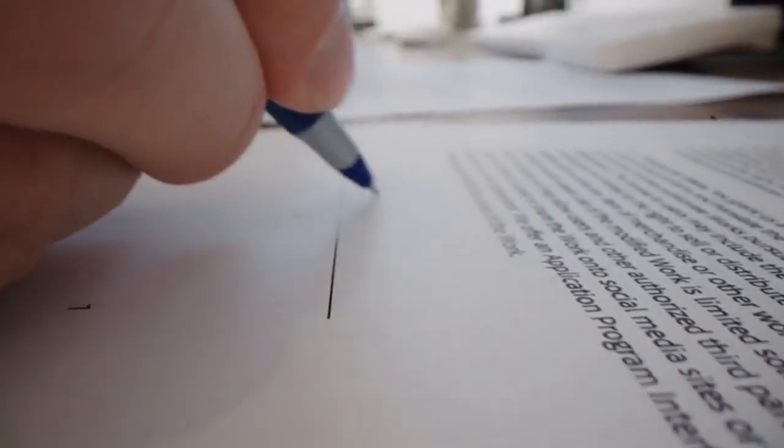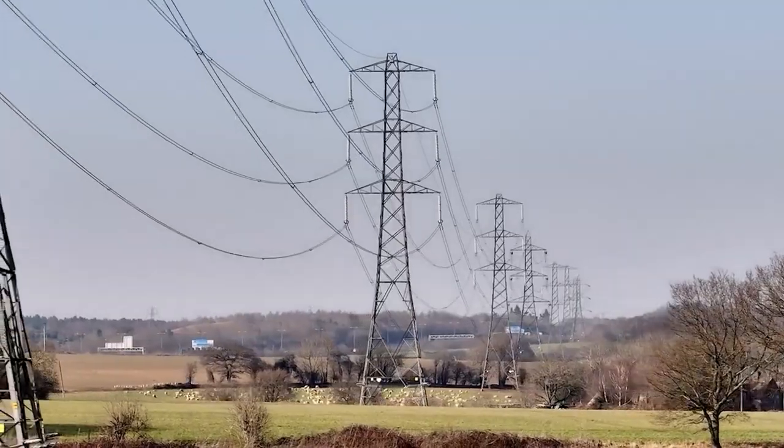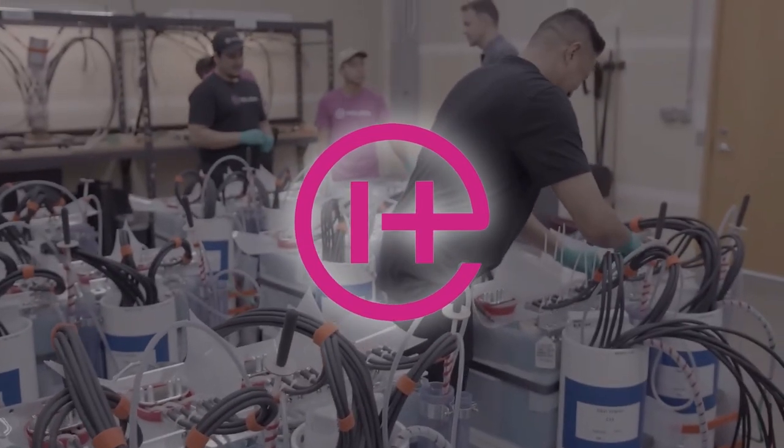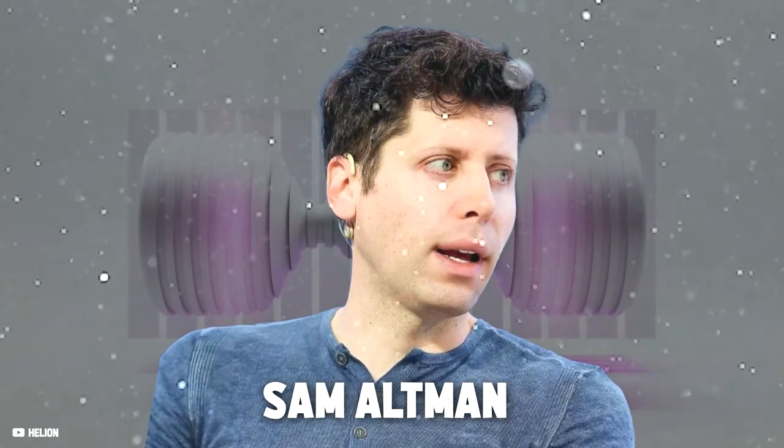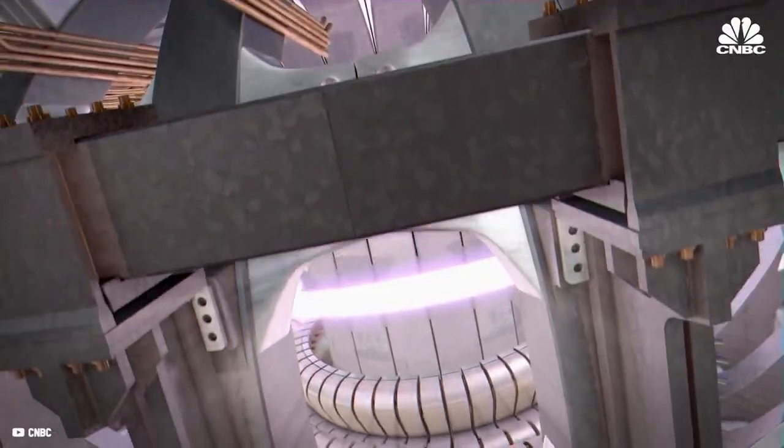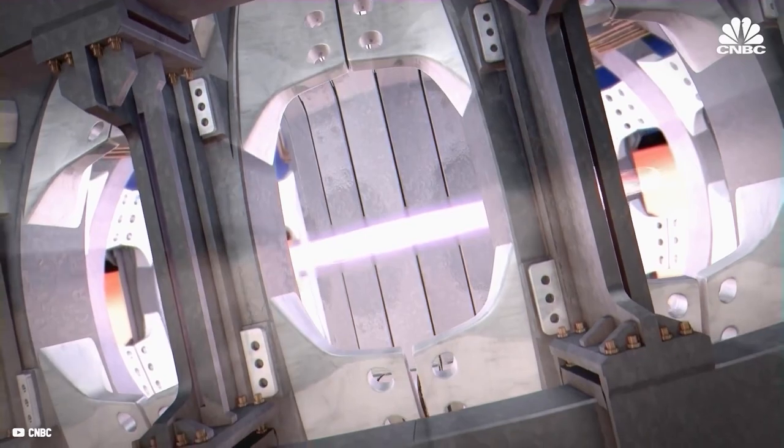Microsoft has signed a deal with Helion Energy to harness the power of the sun here on Earth for a limitless clean power supply. Helion Energy is an American-based startup researching nuclear fusion backed by Sam Altman, the founder of OpenAI and ChatGPT, and it is the first time in history a nuclear fusion company has inked a deal to sell electricity.